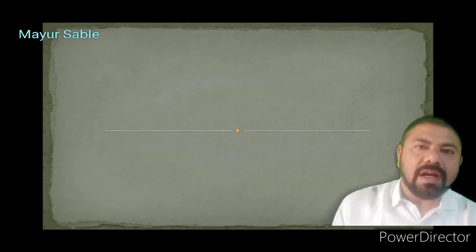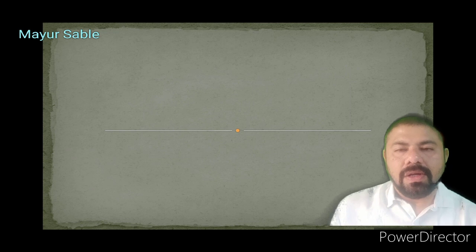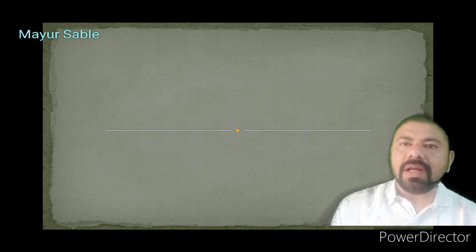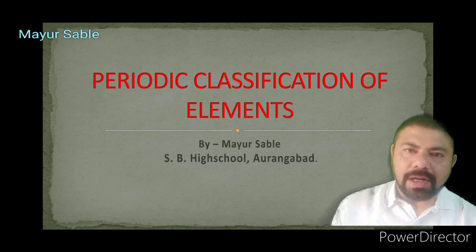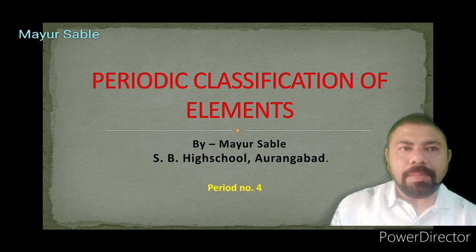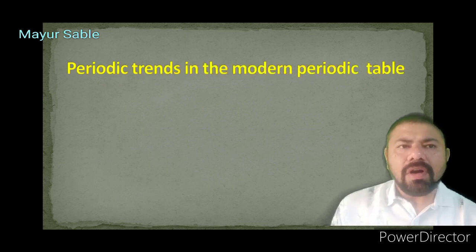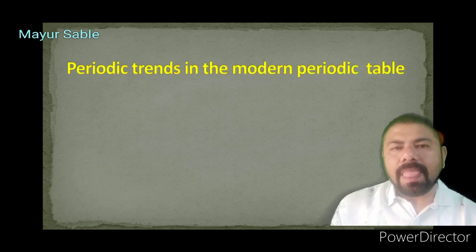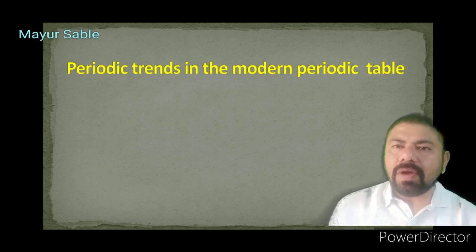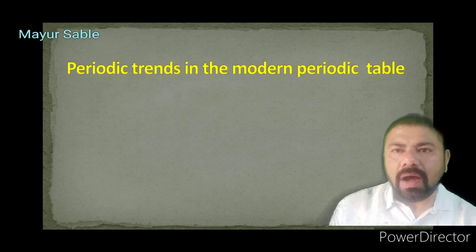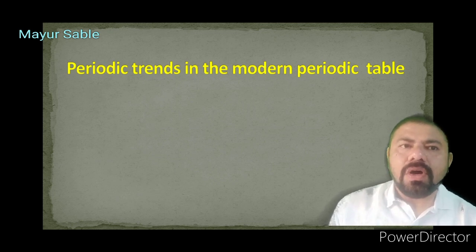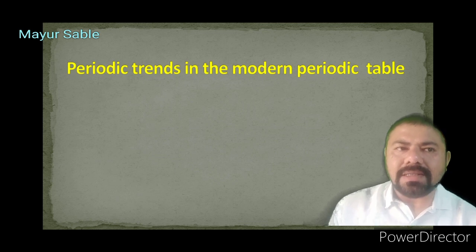Welcome students. We are studying the periodic classification of elements. In the earlier period we studied the modern periodic table. Today we are going to study the periodic trends in a modern periodic table. When properties of elements in a period or group of the modern periodic table are compared, a certain regularity is observed in the variations — this is called periodic trends.